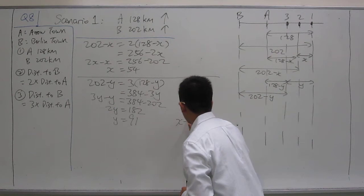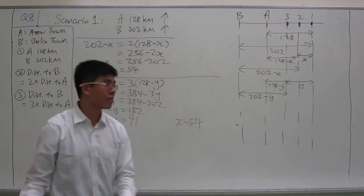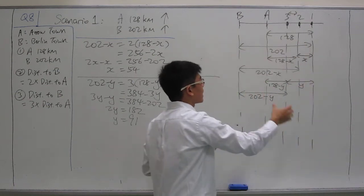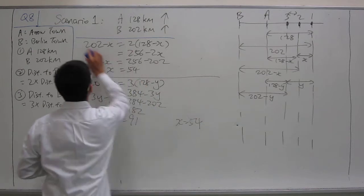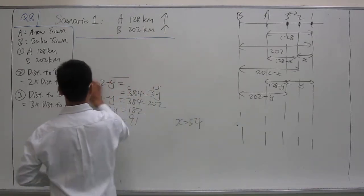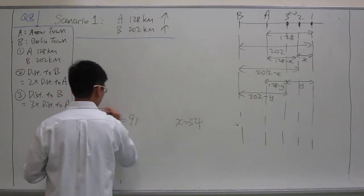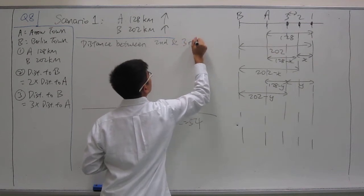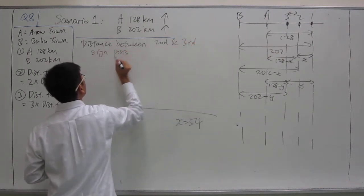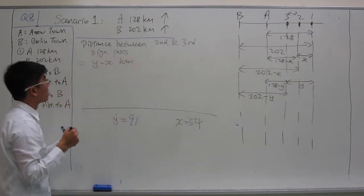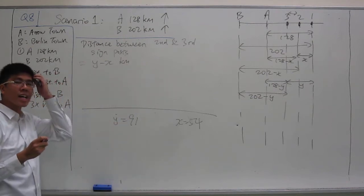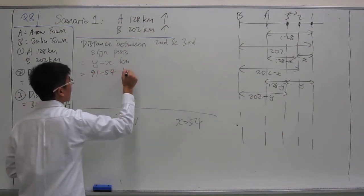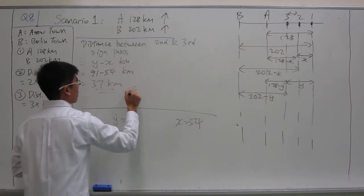Let's write x equals 54 down. Our objective is to find the distance between the second and third signposts, which is y minus x. So the distance equals 91 minus 54 km, which equals 37 km. That's the answer for scenario 1.